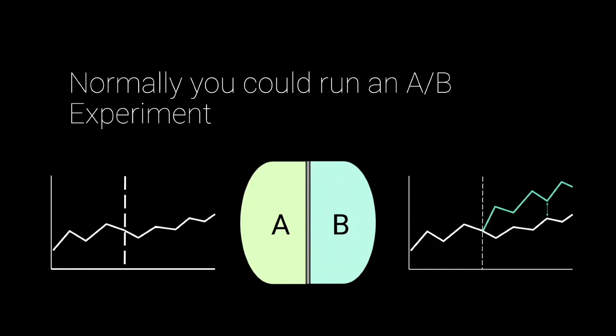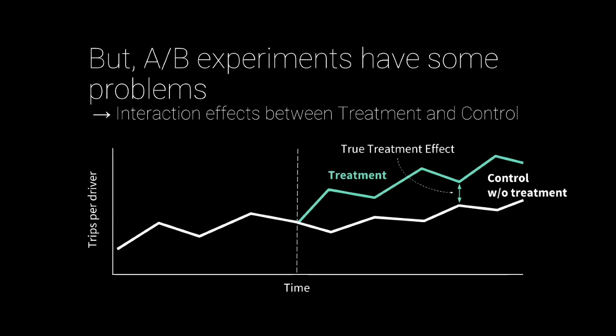There are some interesting concerns with A/B experimentation, especially in a marketplace — and this is very subtle. Normally, when you launch an A/B experiment, you launch that change and measure a metric like trips per driver to capture that lift. The problem is when you launch a change for one side of the marketplace — since we are a dual-sided marketplace — you're going to impact the other side of the marketplace, and as a result, it'll impact back to the original side again.